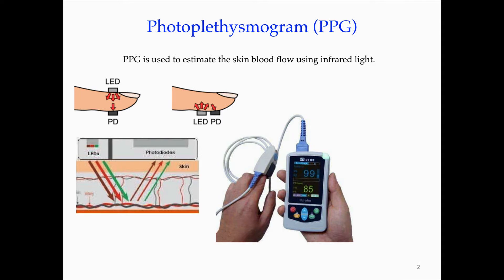This photoplethysmography signal can be easily collected. It has been widely used in medicine since 1960, maybe even earlier. Its mechanism is very simple: you emit a white light through your finger, your nail, or your earlobe. The light goes through your vessel. Inside your vessel there are hemoglobins, which contain different amounts of oxygen during different cardiac cycles.